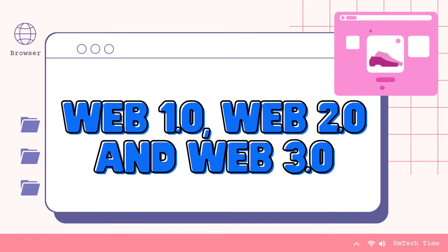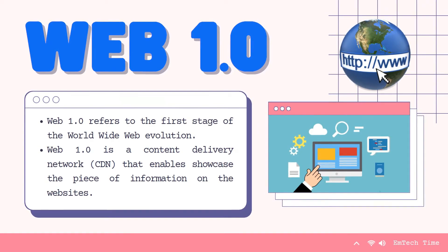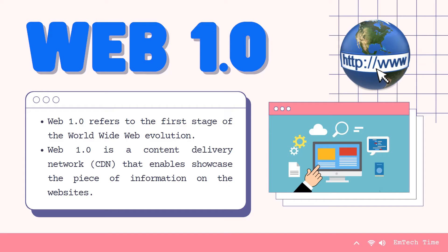Web 1.0 refers to the first stage of the worldwide web evolution. Earlier, there were only few content creators in Web 1.0, with the huge majority of users who are consumers of the content. Personal web pages were common, consisting mainly of static pages posted on ISP-run web servers or on free web hosting services. In Web 1.0, advertisement on websites while surfing the internet is banned. Also, Web 1.0 includes an online digital photography website on which users could store, share, view, and print digital pictures.